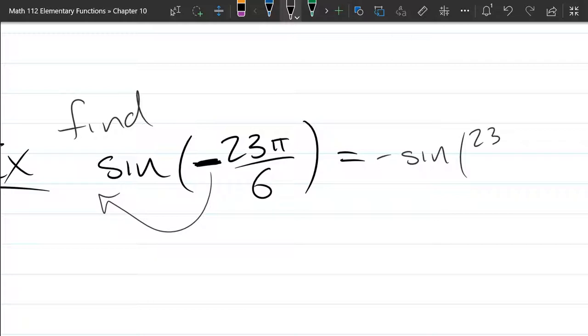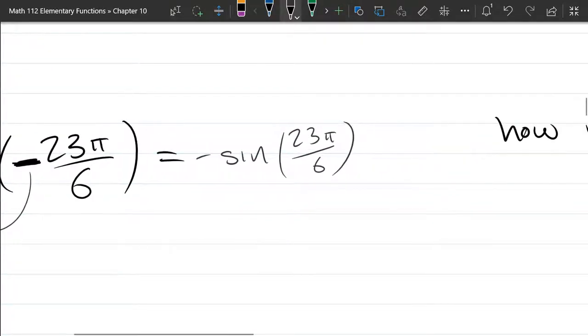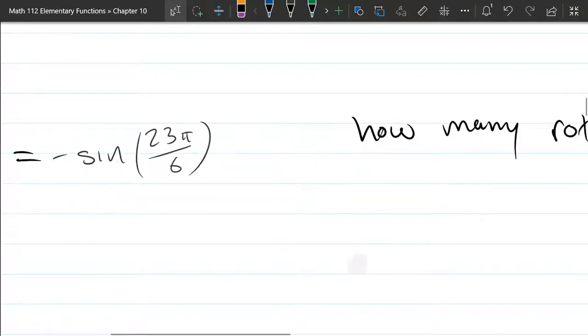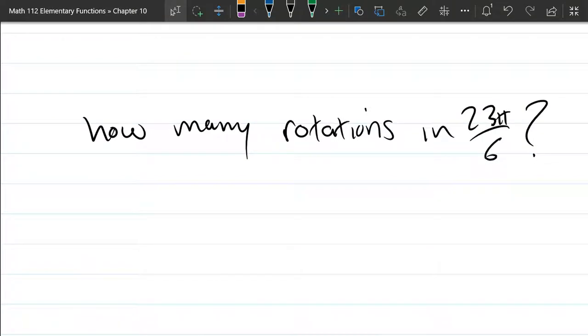So it's negative sine 23π over 6. Alright, so we dealt with one of the issues, which is the negative. Now we're going to deal with this angle right here. So 23π over 6 obviously is bigger than 2π. How much bigger? So let's answer this question.